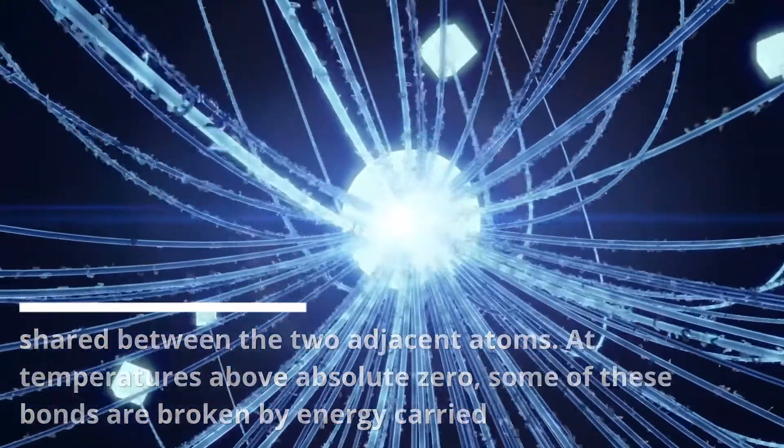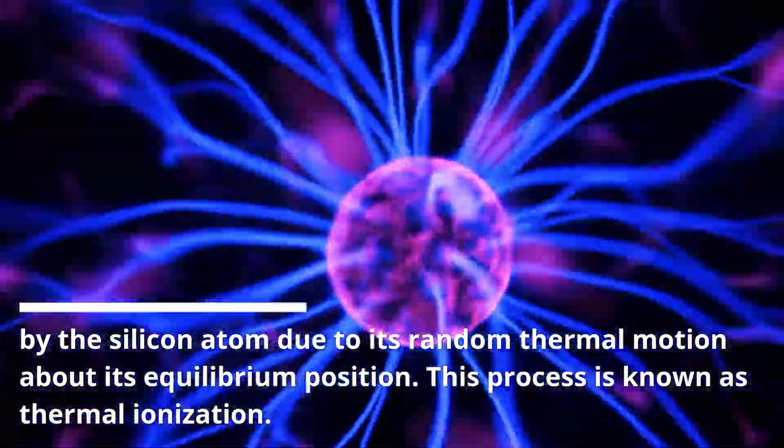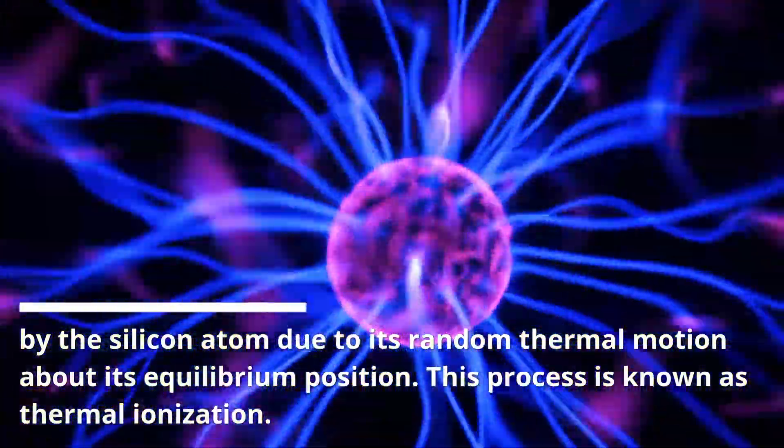some of these bonds are broken by energy carried by the silicon atom due to its random thermal motion about its equilibrium position. This process is known as thermal ionization.